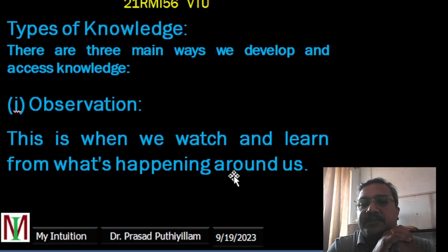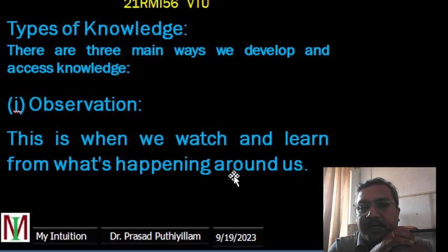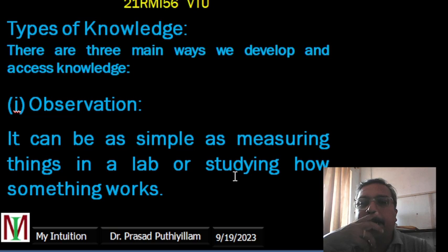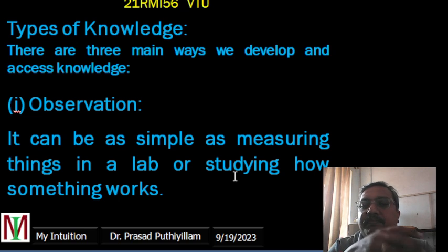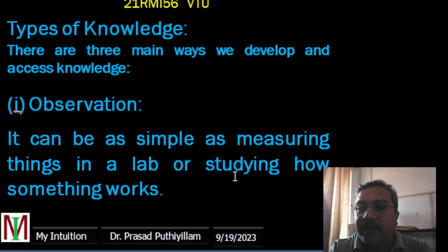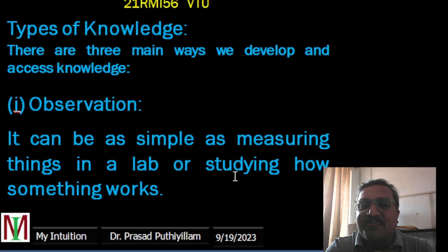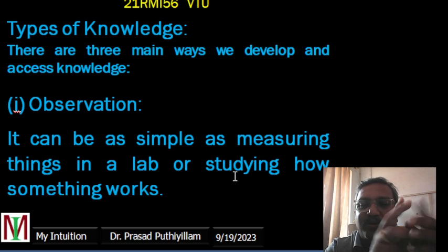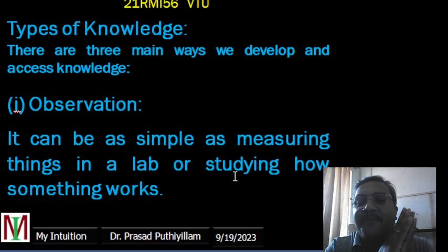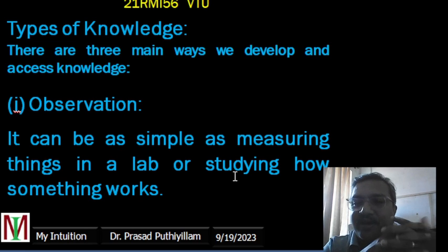Types of knowledge: there are three main ways we develop and access knowledge. First, observation — this is when we watch and learn from what is happening around us. It can be as simple as measuring things in a lab experiment, or studying how something works. For example, making a small paper rocket and observing how it flies, what the aerodynamics are, what the air friction is — that is actually a study through observation.